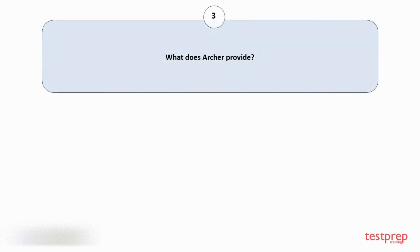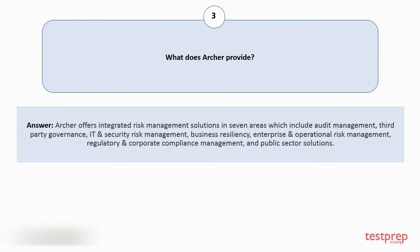Question number 3: What does Archer provide? Archer offers integrated risk management solutions in seven areas which include audit management, third-party governance, IT and security risk management, business resiliency, enterprise and operational risk management, regulatory and corporate compliance management, and public sector solutions.